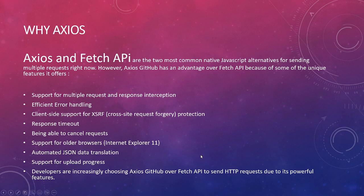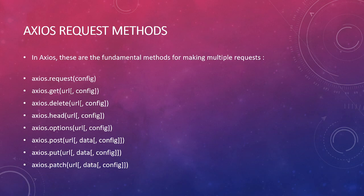Axios request methods include GET, POST, DELETE, and PUT calls — Axios supports all of these. You can also use DELETE, HEAD, OPTIONS, PATCH calls. For Axios requests, you need to pass configurations: for a GET call you pass the URL and config, for DELETE you can see all the parameters as well.